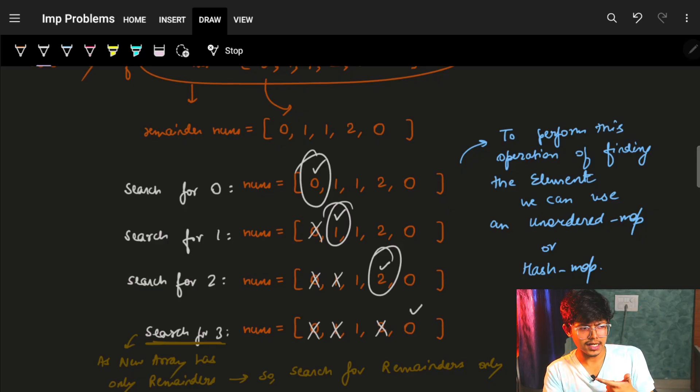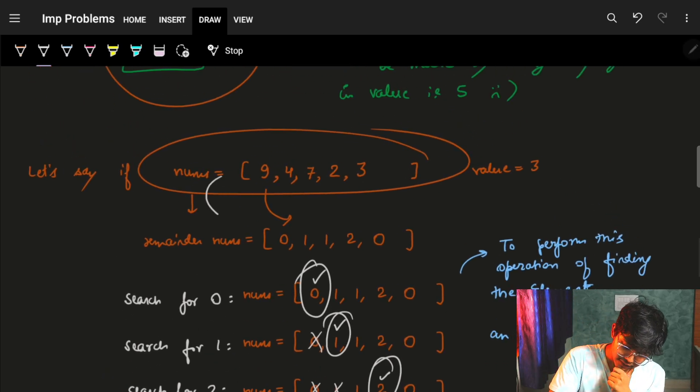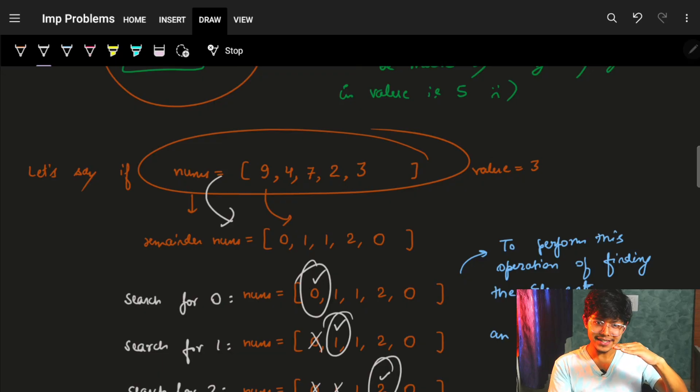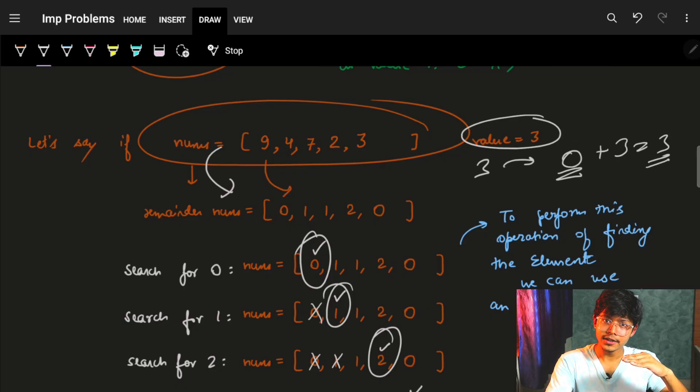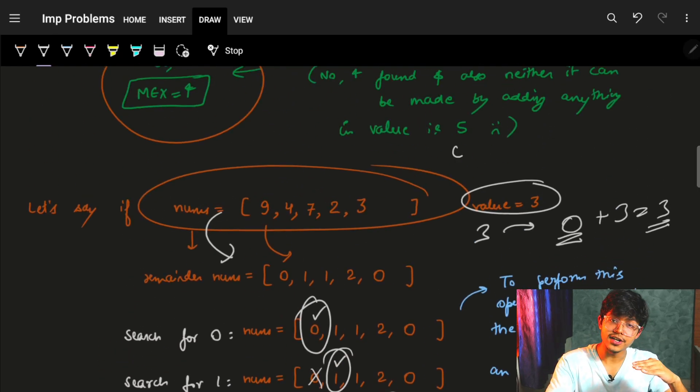So is it the case that my MEX is 3? No. You remember why? Because we converted this nums array to their least value, which means that if I need to find a 3, it's also equivalent if my value is 3, I can also find a 0. Because from 0, I can reach back to 3. So rather than searching for my value, I am searching for 0, 1, 2, 3, 4, 5, 6 and so on.